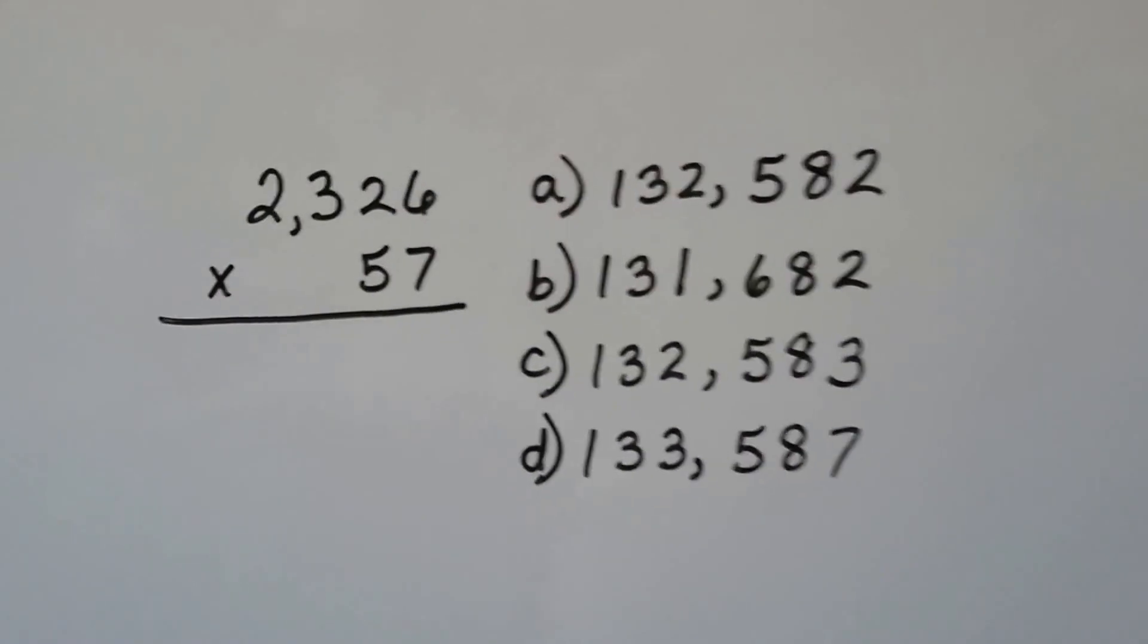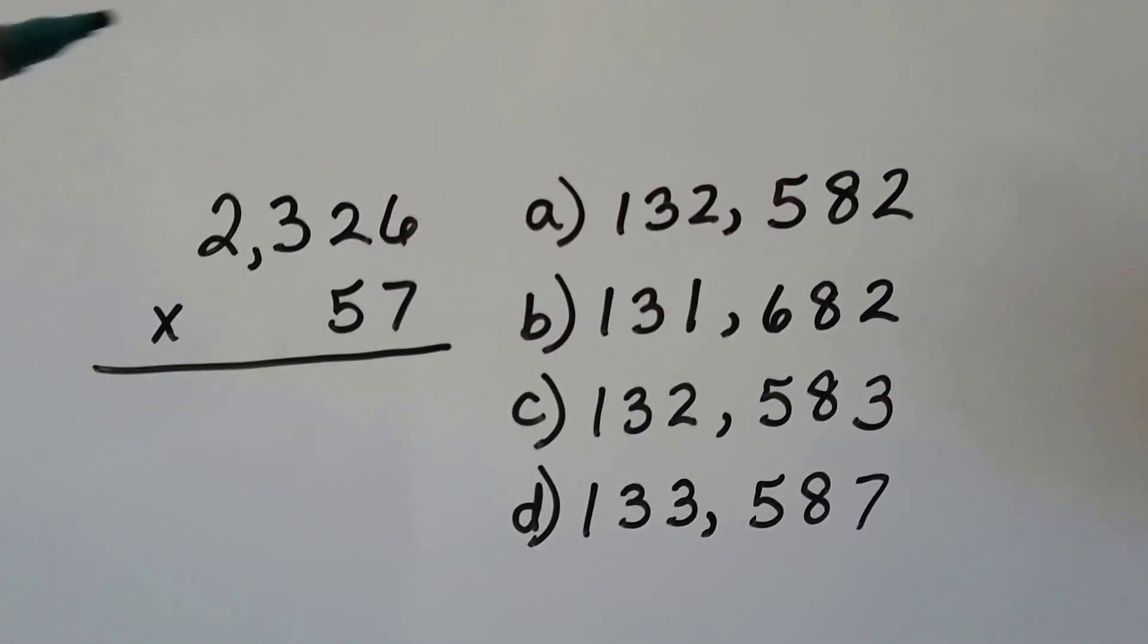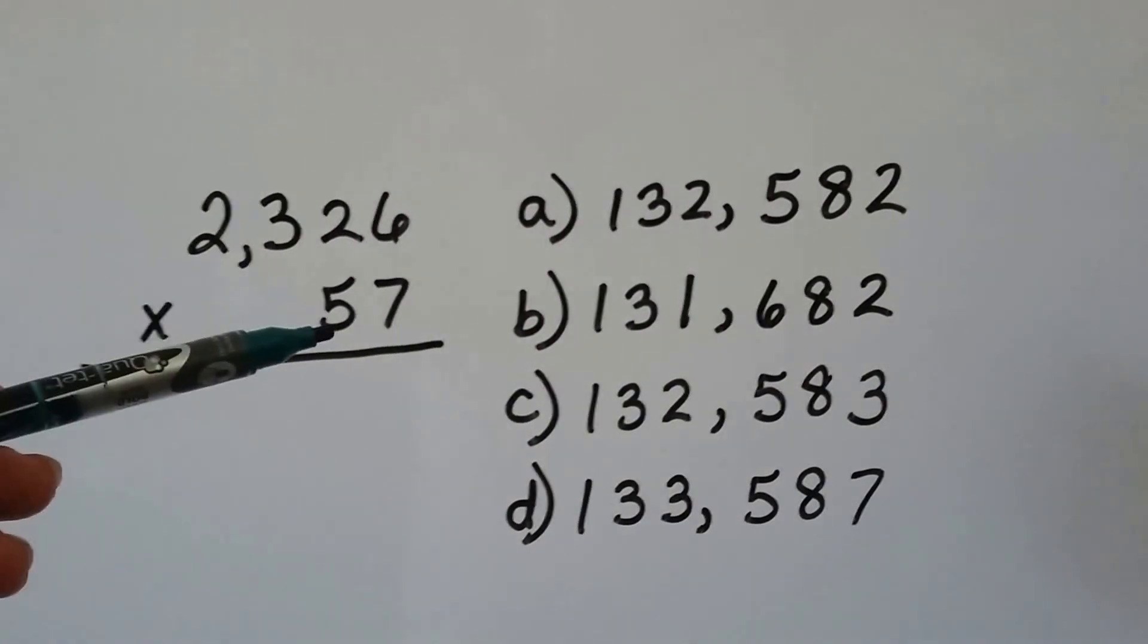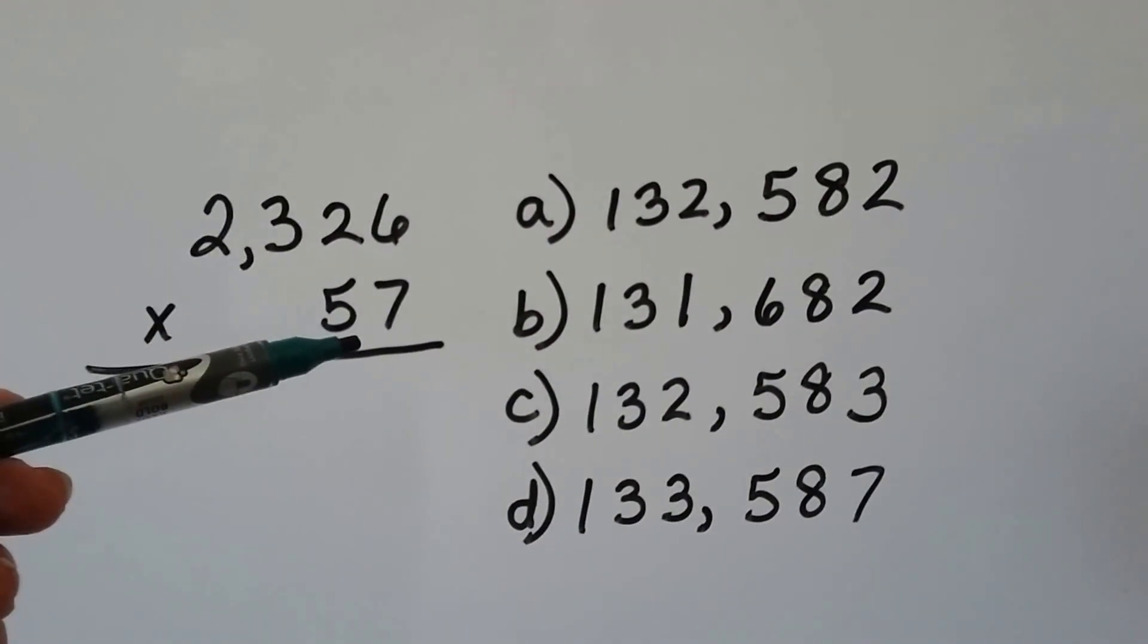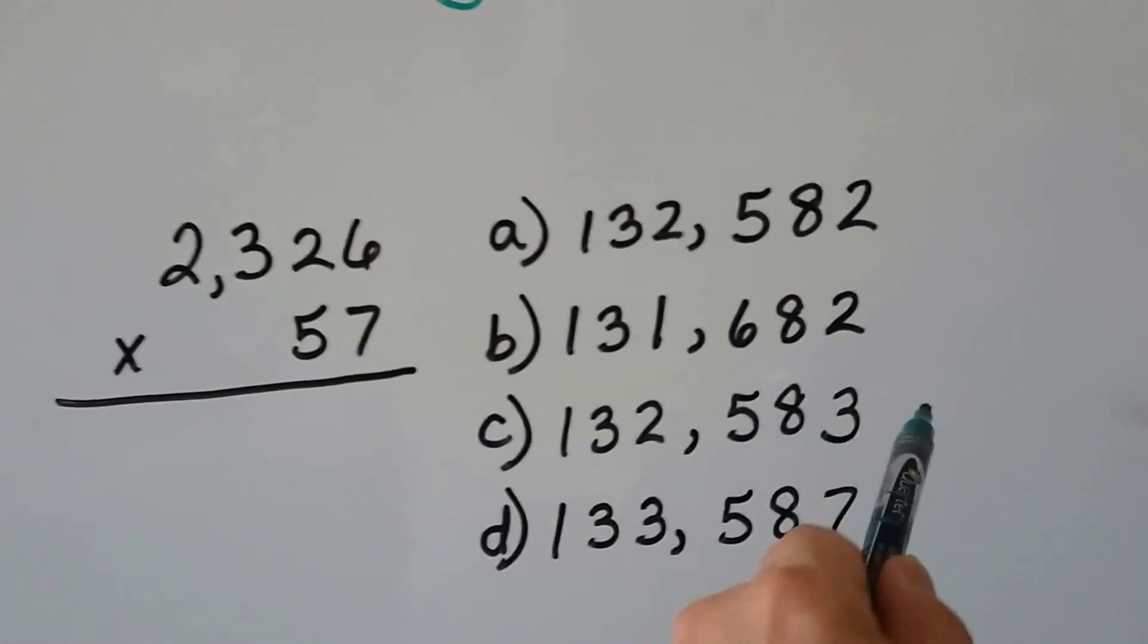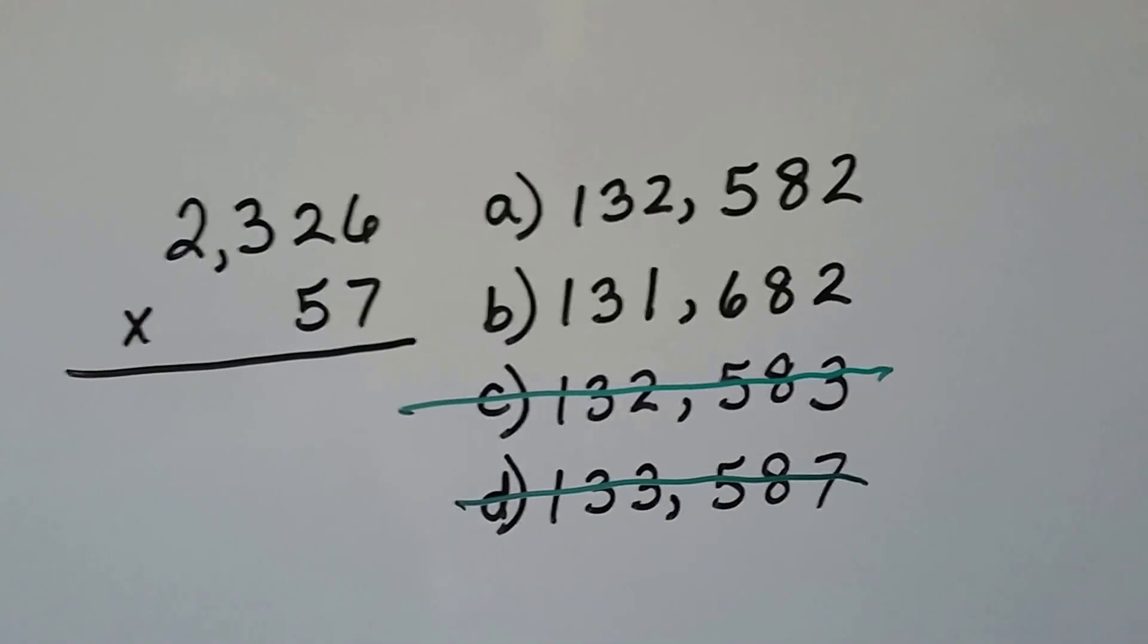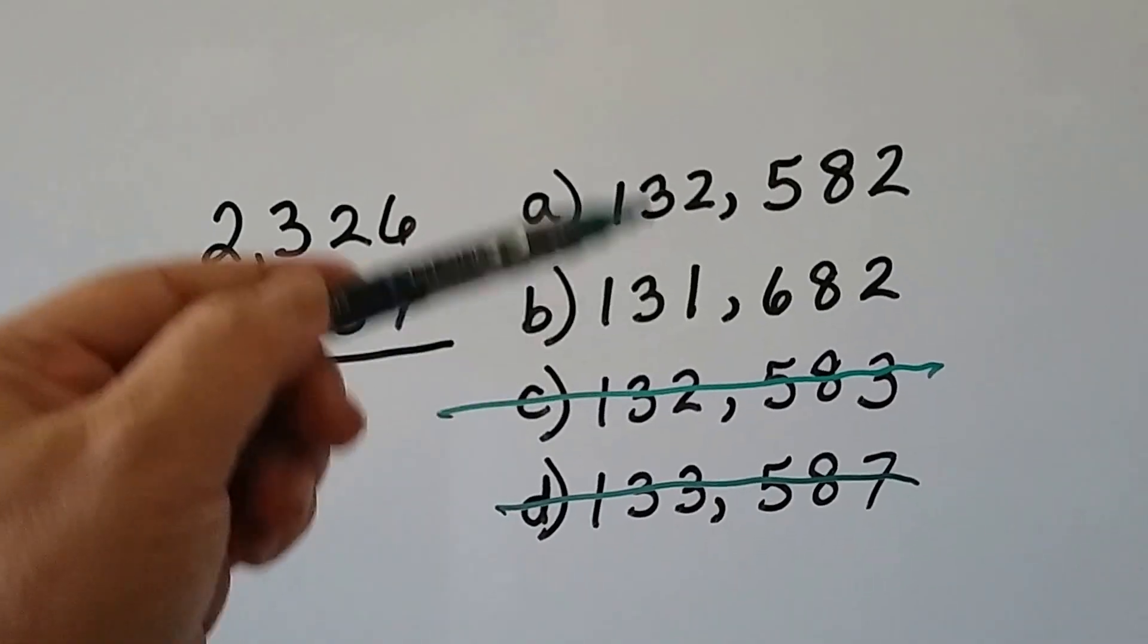Let's try it again. We've got 2,326. Well, that ends in a six, so that's even. And a 57, well, that's odd. Even and odd, that's going to make an even answer. So we know that this one that ends with a three and this one that ends with a seven are not even choices. It's going to be one of these two.